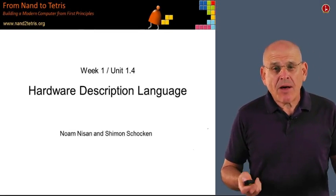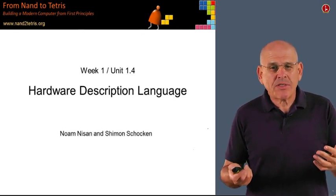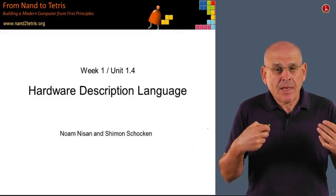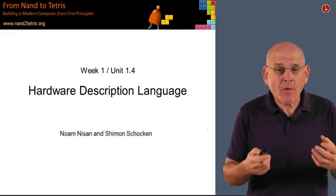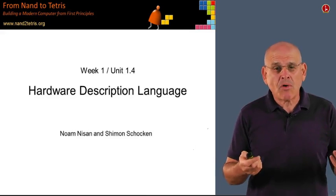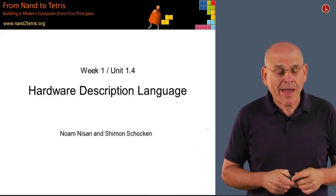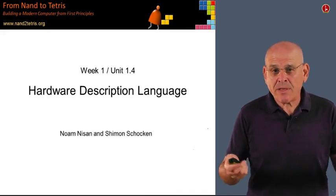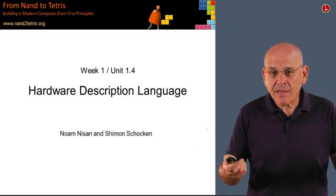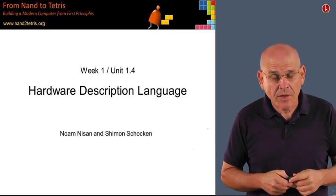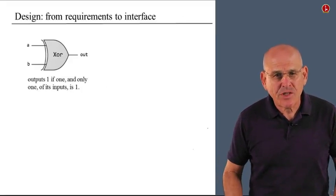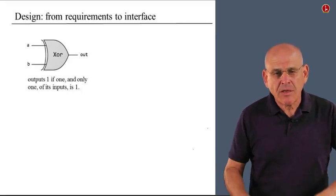In previous units, we talked about how Boolean functions can be realized using logic gates. In this unit, we're going to talk about how we can actually build and implement the logic gates using a formalism called Hardware Description Language or HDL. Once you build a logic gate in HDL, you can actually simulate it, test it, and finally build it in hardware. So let's begin this journey from abstraction to implementation.